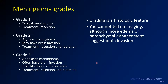Meningiomas are graded into three grades. Grade one — typical meningiomas — are treated with resection. Grade two (atypical) and grade three (anaplastic) have higher rates of cellular turnover, grow more quickly, can have brain invasion, and are treated with radiation after resection. You cannot reliably determine the grade on imaging alone, although greater parenchymal enhancement and edema suggest brain invasion and a higher grade.